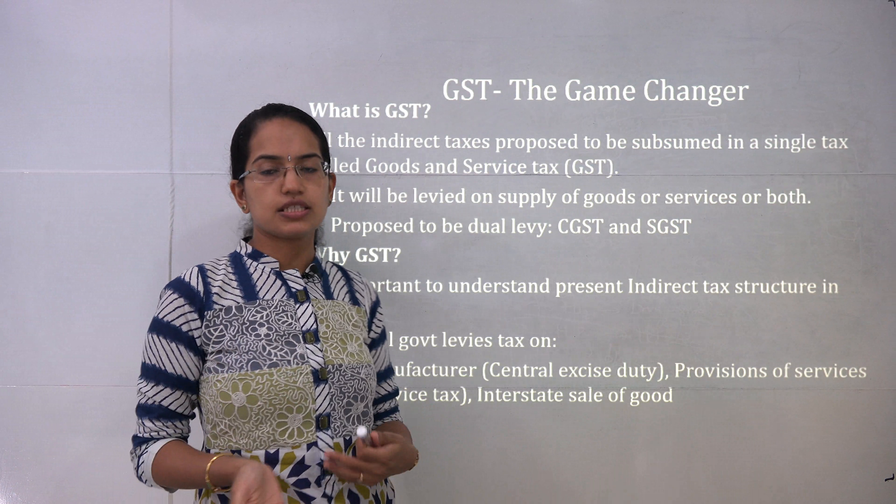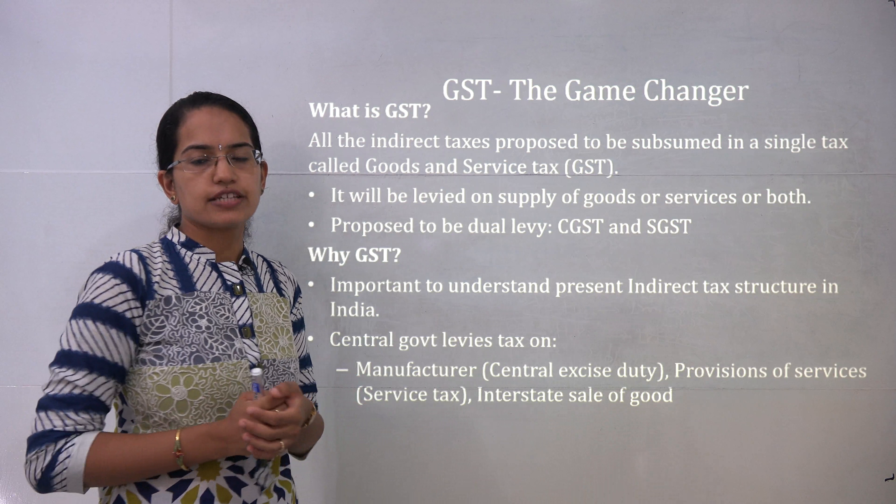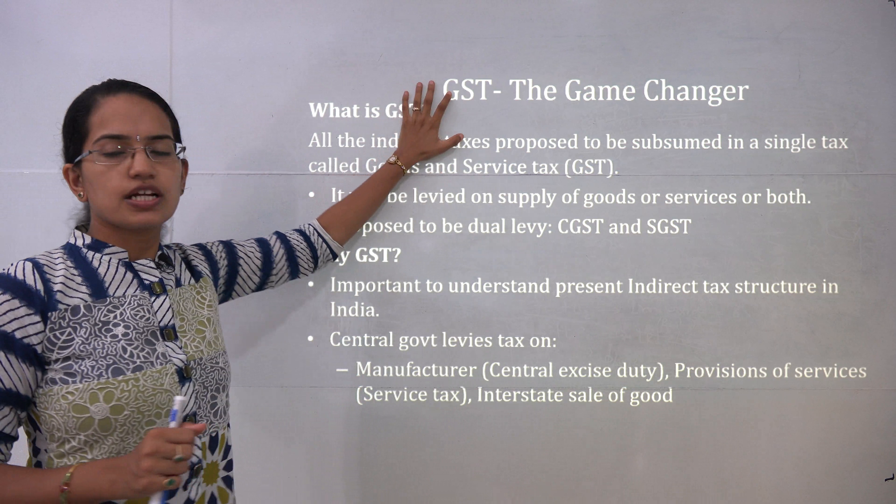GST — the Goods and Services Tax, called a good and simple tax — is very important for mains and prelims. It involves the merger of nearly more than 500 taxes levied by the centre and state, including lottery tax, road tax, sales tax, VAT, excise, and customs. There will be 3 taxes: CGST (Central GST), SGST (State GST), and IGST (Integrated GST). IGST is managed by the centre and levied on the supply of goods and services. Its aim is one nation, one market, with a dual taxation system under centre and state so funds are allocated equally. The central government levies taxes on manufacturers through central excise, service tax, and interstate sale of goods.